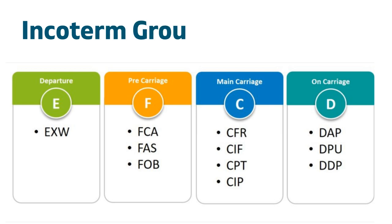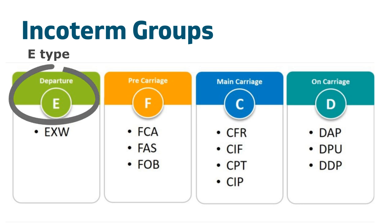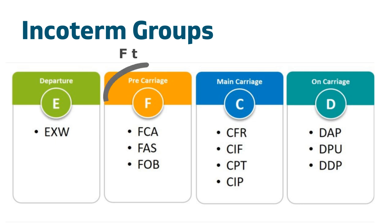Let's talk about the different incoterm groups. Incoterms can be sorted into four different groups. The first group is E-type, which includes EXW, meaning the seller bears little cost and responsibility. The second group is F-type, including FOB, FCA, and FAS. For this type, the seller is responsible for transporting the goods to the buyer's predefined transport medium, and then the buyer assumes all responsibilities from that point onwards.